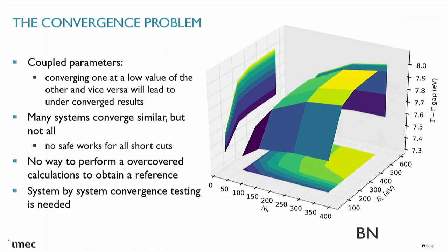Here's the convergence problem: this is the gap at Γ of boron nitride if I vary two parameters — the number of empty states going into the construction of the self-energy, and the energy cutoff used in the expansion of the screening, response function, and self-energy. If I decided to do my bands convergence at a low cutoff, I'd find a curve that looks converged at 100 bands, maybe even 50. Then if I do the cutoff convergence at a low number of bands, that also looks converged. But you can see these two parameters are not decoupled — I cannot do these individual convergence studies; I need to do them coupled.